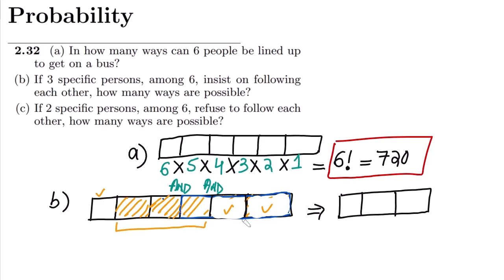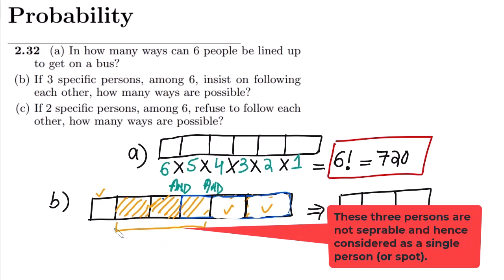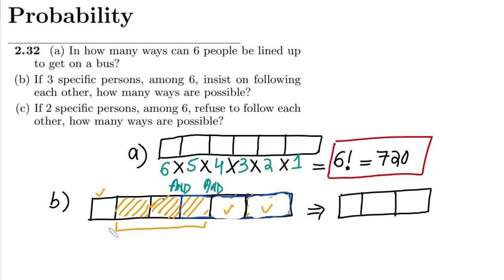For these four spots, the first slot has four options, then three, then two, then one. So treating the three persons as a single unit gives us 4 factorial arrangements, which is 4 × 3 × 2 × 1 = 24. We have 24 options for the overall arrangement of the four spots.